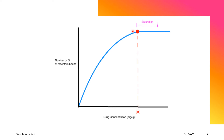When we say at saturation, this means that all the receptors are already bound to the drug, so that no matter how much more concentration you add — for example, if you add another dose of this particular drug — the binding curve will not increase and it comes to a plateau. When the drug reaches saturation, that is already the maximum binding, meaning it has already bound to all of its receptors.